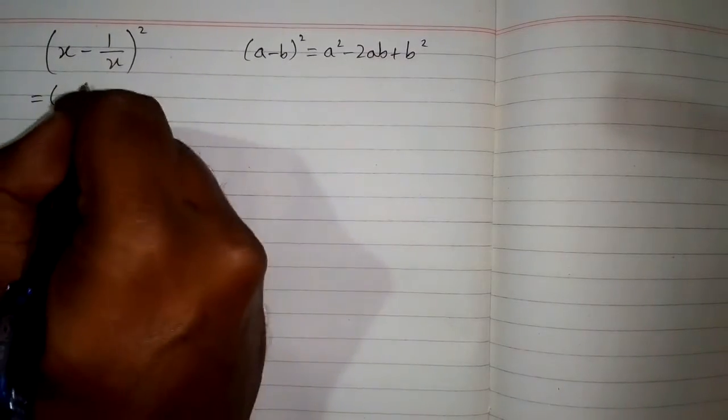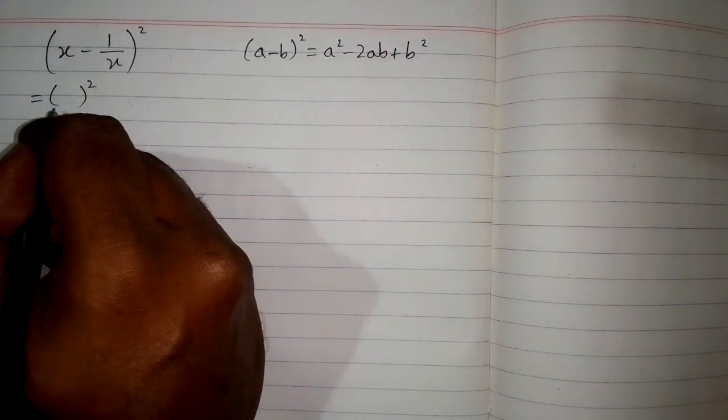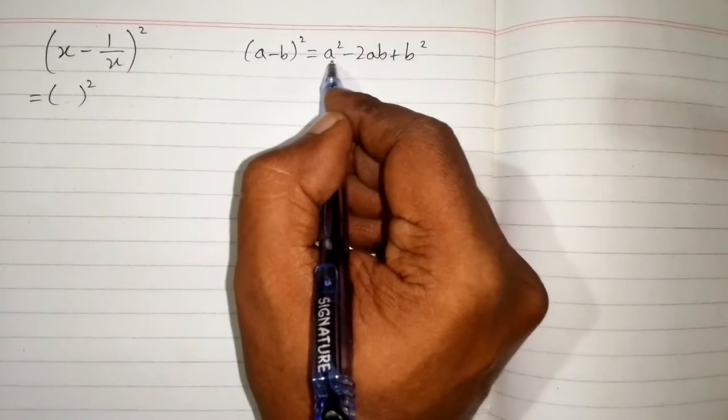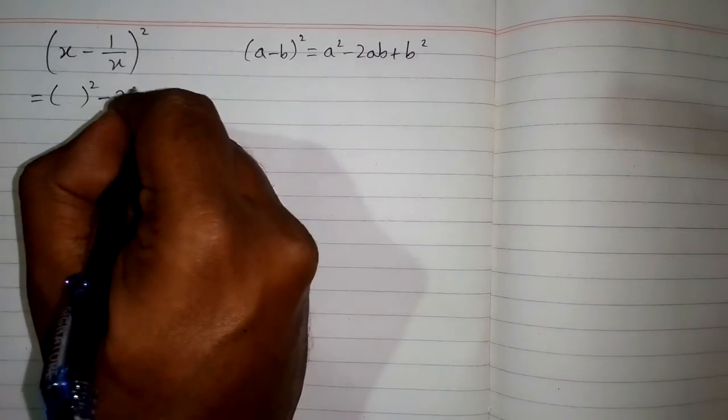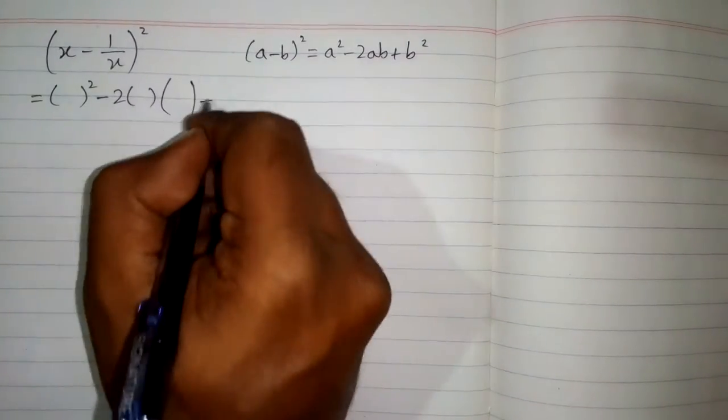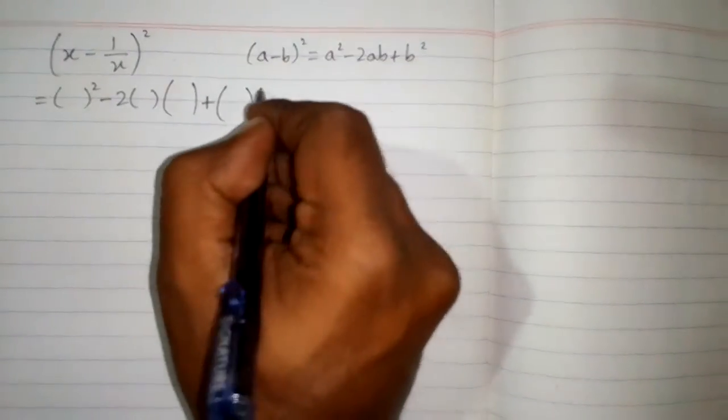So first we will write the structure of the formula. We can put brackets in place of a and b in this formula. So first we will write a square, then minus 2ab plus b square.